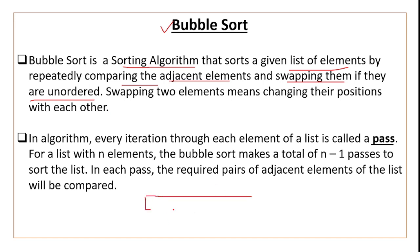Let me give a small example. I have a small list: first element is 1, second element is 5, third element is 2, and fourth element is 4. Bubble sort will compare the first and second element — the adjacent elements. These two elements are in correct order: 1 is smaller than 5, so they will not swap.